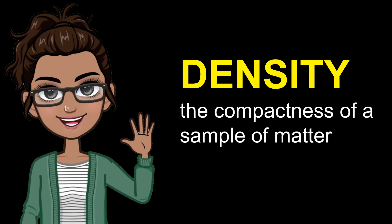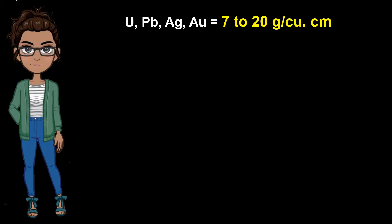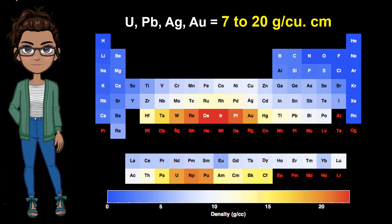Density is defined as the compactness of a sample of matter. It is calculated as mass divided by volume. Different samples of mineral of the same size differ in mass because of the different elements that make up such minerals. Minerals containing heavy metals like uranium, lead, silver, and gold have densities that range from 7 to 20 grams per cubic centimeter. The periodic table of elements shows that each element has a unique density.